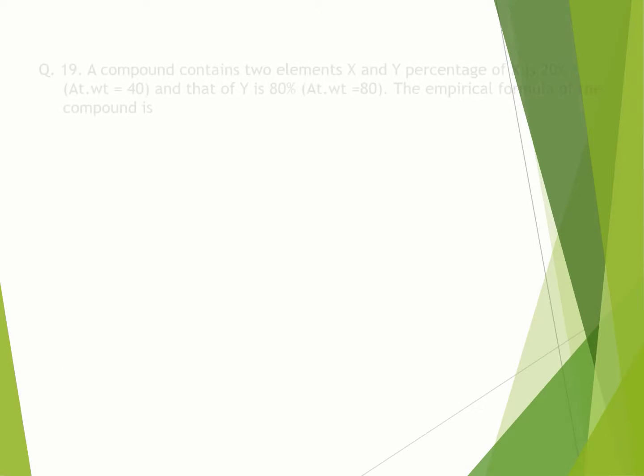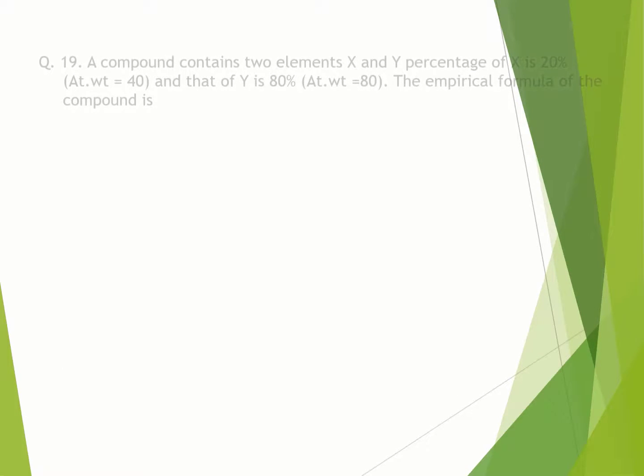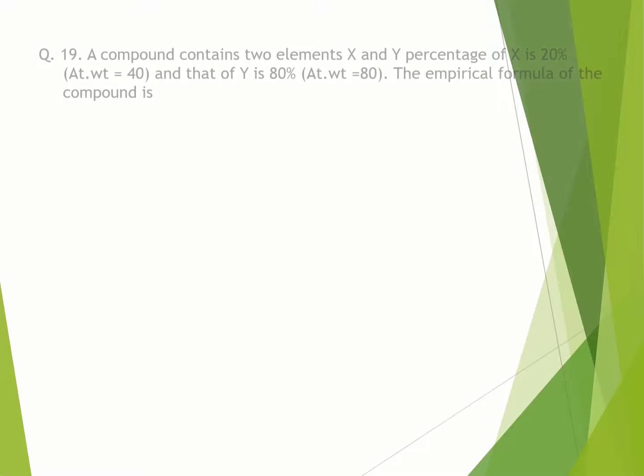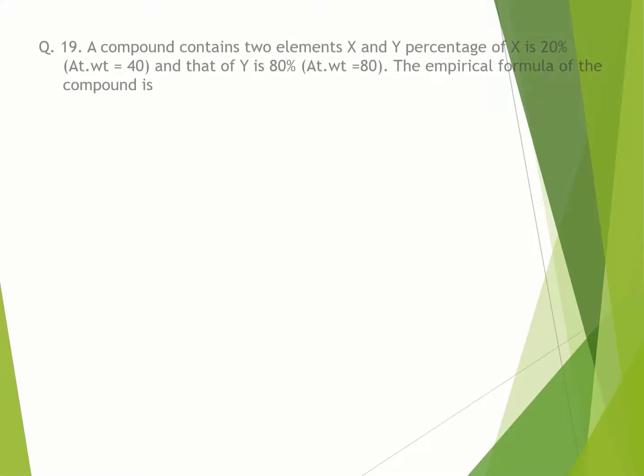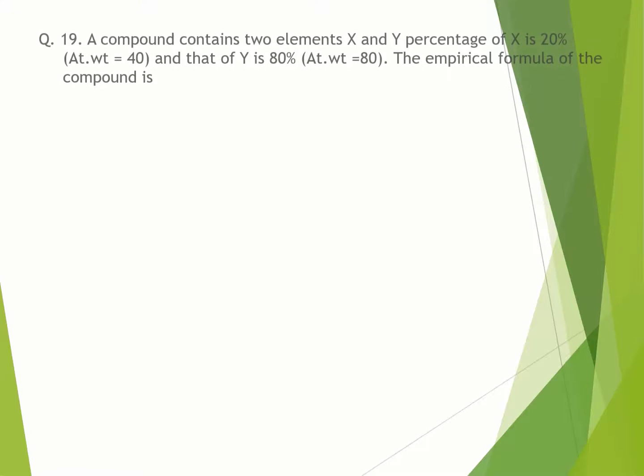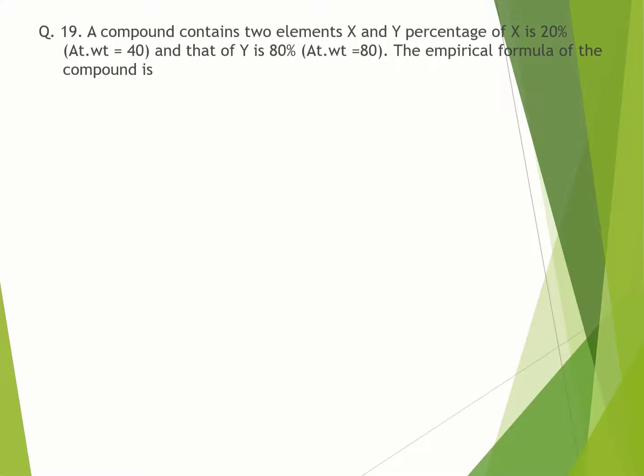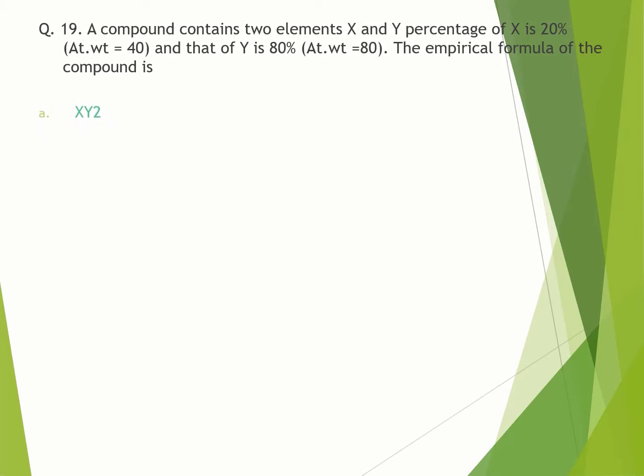Question number 19. A compound contains two elements X and Y. Percentage of X is 20% and that of Y is 80%. The empirical formula of the compound is: A. XY2. B. X2Y. C. Cannot be determined. D. XY. Correct option is A.